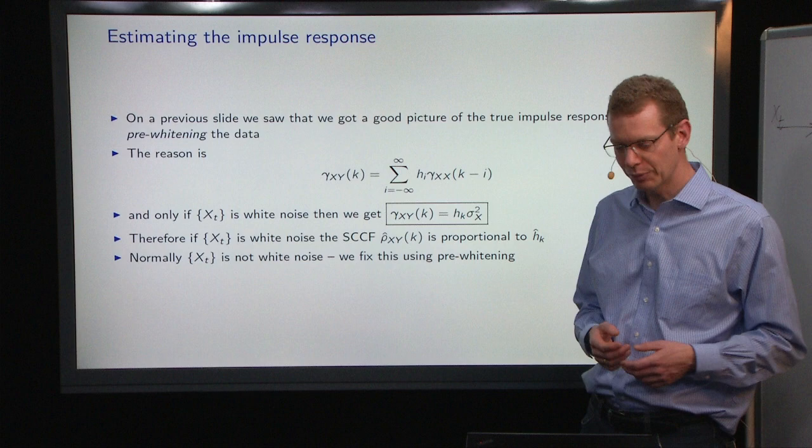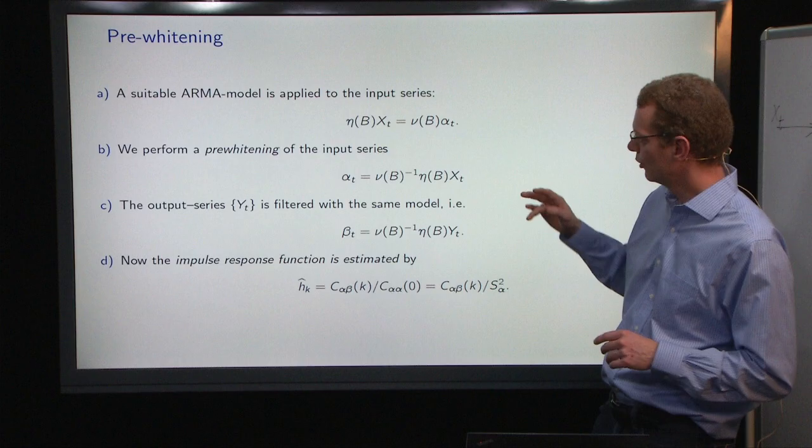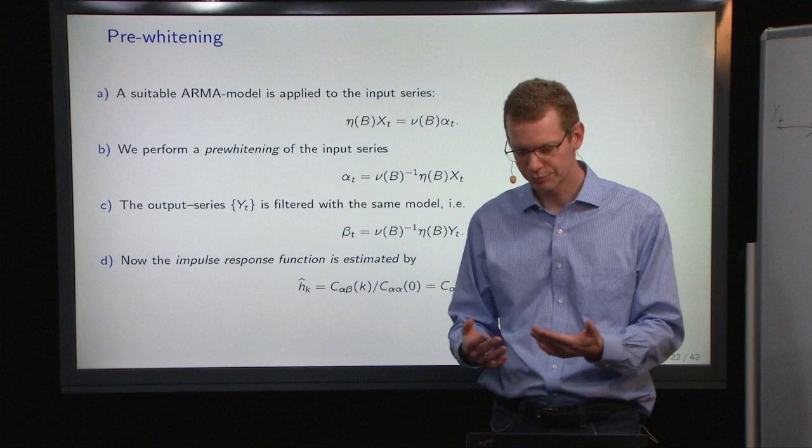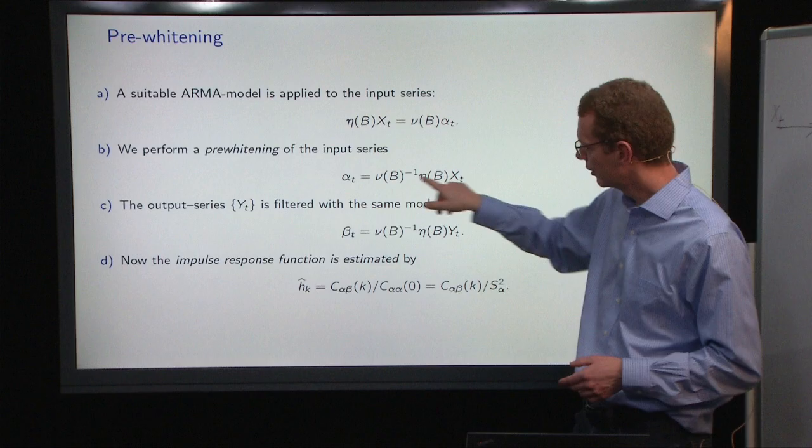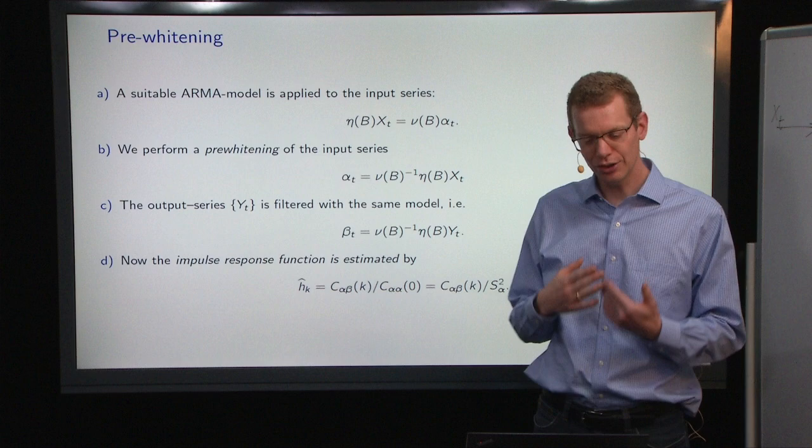So that means we want x to be white noise, because then we will get exactly what we're looking for. Now, how do we make x white? We use a model to help us do that. This is what we do. It's a four-point recipe. Basically, the first thing you do is that you look at the input series, and you try to model that. How can we make a model for the input series? Assume that we can make an ARMA-style model for that.